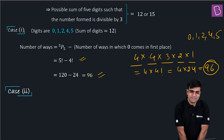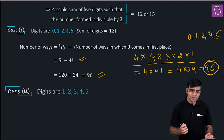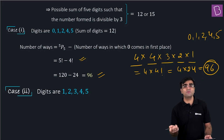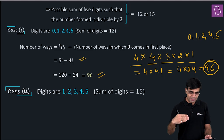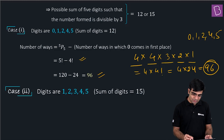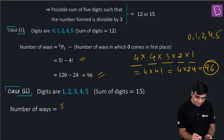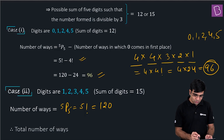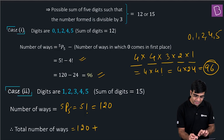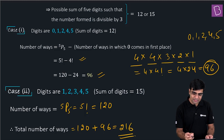Case 2 — digits {1, 2, 3, 4, 5}, sum = 15. These five digits are to be placed in five places, and since 0 is not among them, all arrangements are valid. The number of ways = 5P5 = 5! = 120.